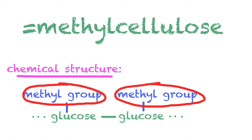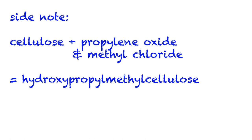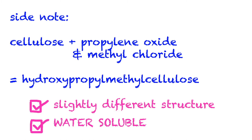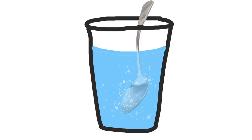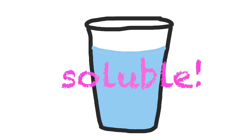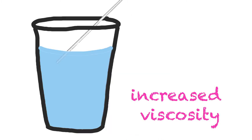This is important because it allows methyl cellulose to be water-soluble. Another type of methyl cellulose is hydroxypropyl methyl cellulose, which can be made by treating cellulose with both propylene oxide and methyl chloride. It has a slightly different structure but is still water-soluble. Water solubility is key because it allows methyl cellulose to have many uses. Adding methyl cellulose to liquid increases the viscosity, or thickness, of the liquid.